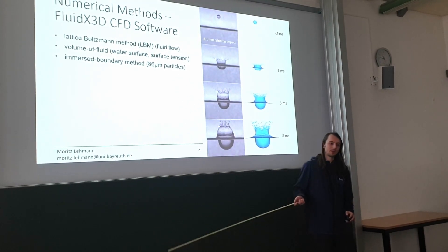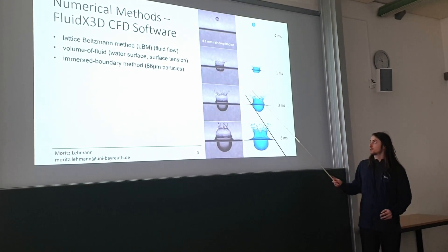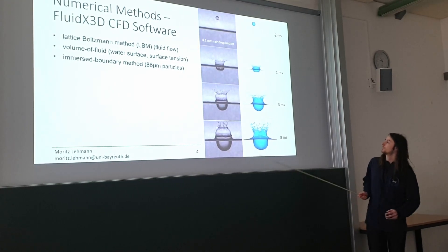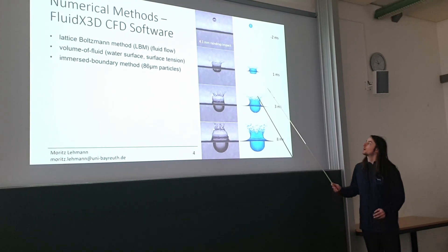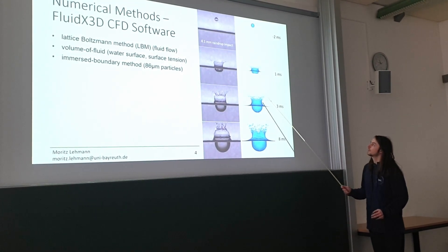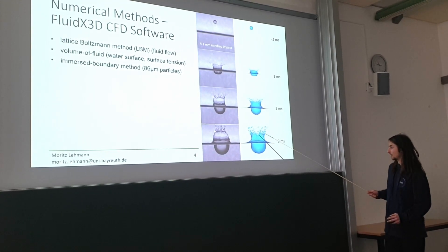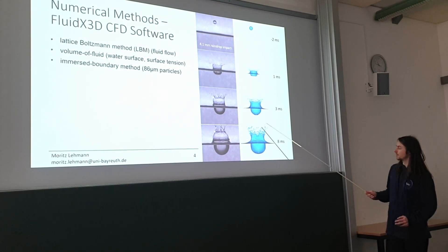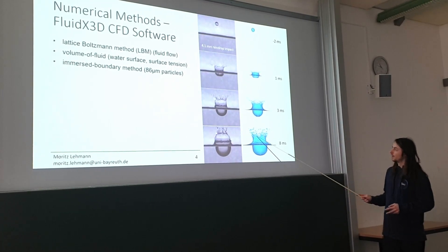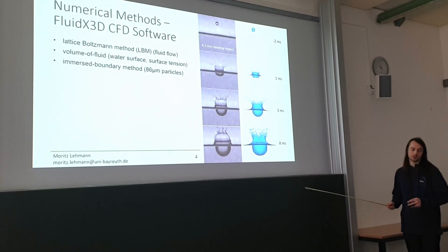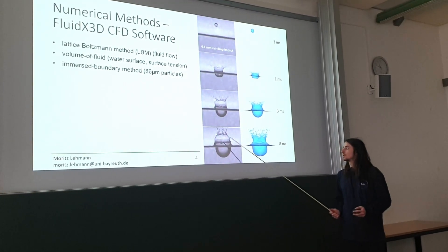In the simulations the particles have a diameter of about 86 micrometres. I spent a lot of time validating the software extensively — here's just the tip of the iceberg: a direct comparison between simulation and experiment with exactly the same parameters, and the agreement is very good for the initial splash phase. For the later phase there is a difference because in the experiment the crown closes into a dome, and in the simulation this doesn't happen because I don't simulate the air pressure. But I'm only interested in the initial spraying phase, so this is not as relevant.